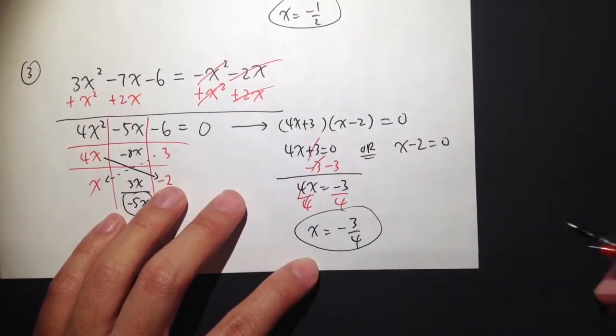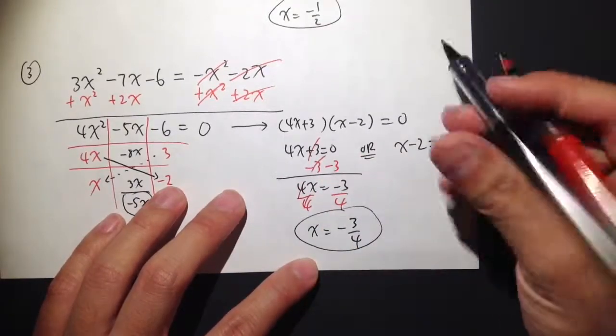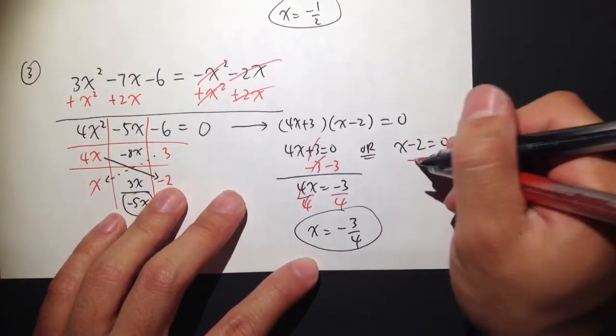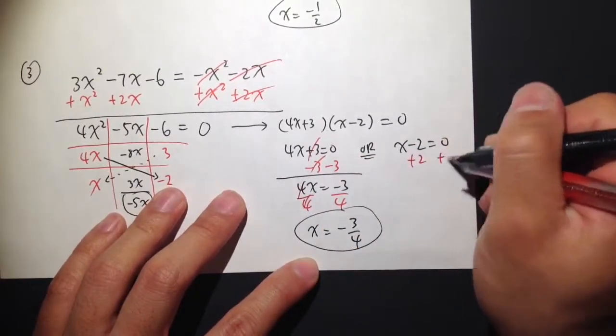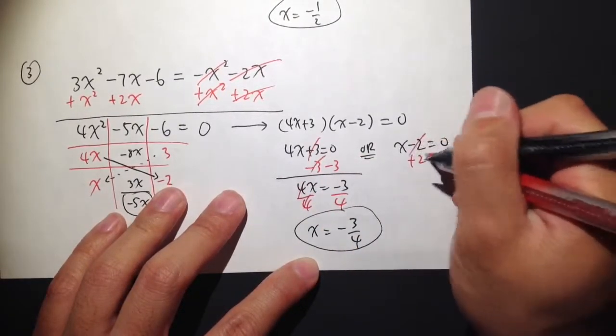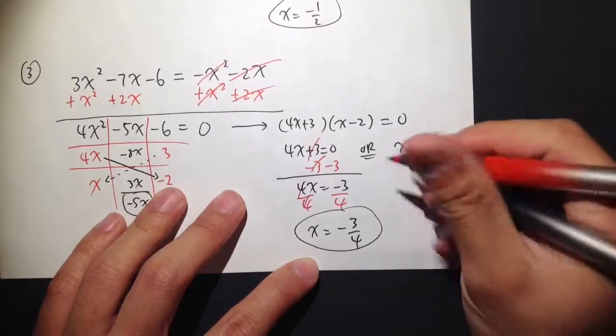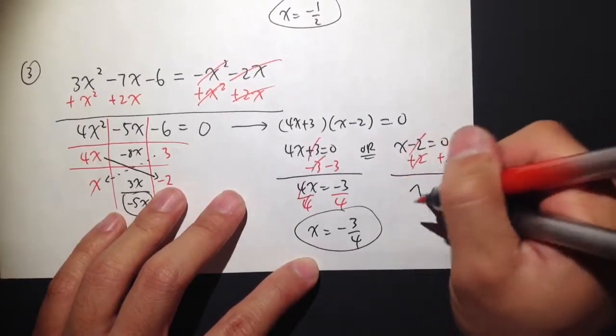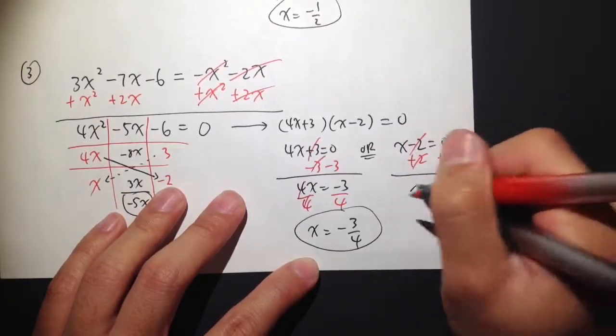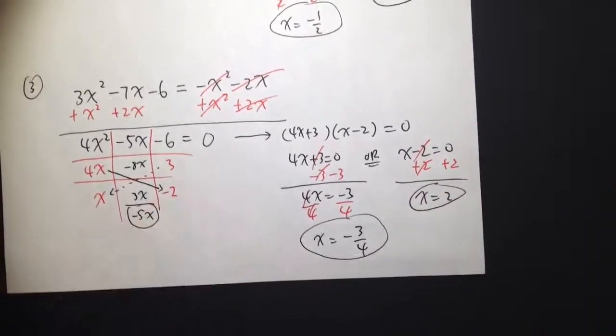For the second answer, we just add 2 on both sides, and we get x is equal to 2. Second answer.